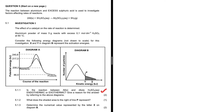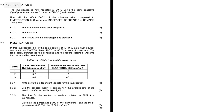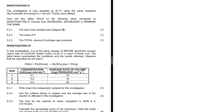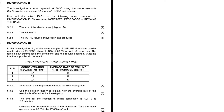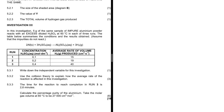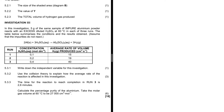We're going to focus on question 5.3.3. The question asks: in this investigation, 5 grams of the same sample of impure aluminium powder reacts with an excess diluted sulfuric acid at 60°C in each of the three runs. The table below summarizes the conditions and results obtained. Assume that the impurities do not react.